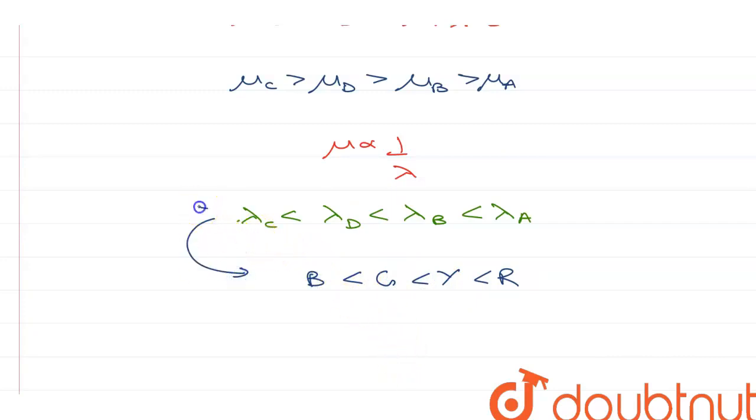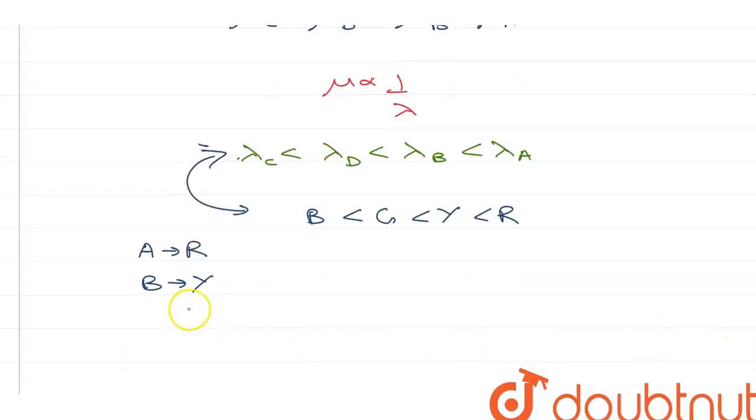So, if I correspond these two relations, or these two orders, I can say that A is red, B is yellow, C is blue, and D is green.